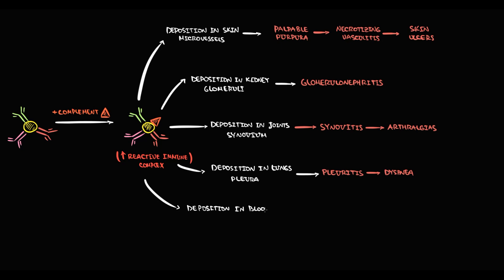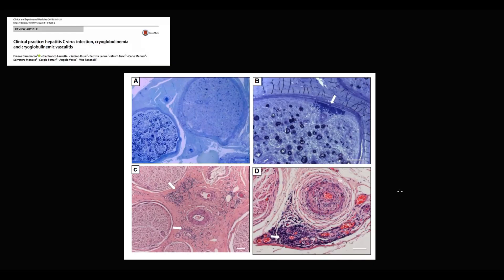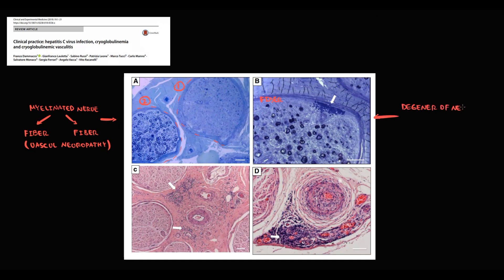Immune complexes can deposit in blood vessels supplying nerves, causing central nervous system injury — called vasculitis with CNS involvement — or cranial nerve injury. If immune complexes affect peripheral nerves, this causes peripheral neuropathy. Histological images show degeneration of myelinated nerve fibers — a feature of vasculitic neuropathy — and degeneration of nerve fibers accompanied by extravasation of red blood cells caused by inflammation-increased permeability.